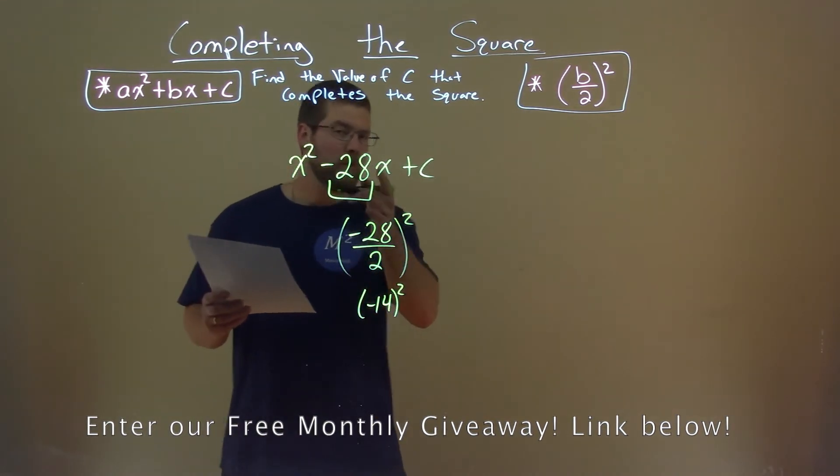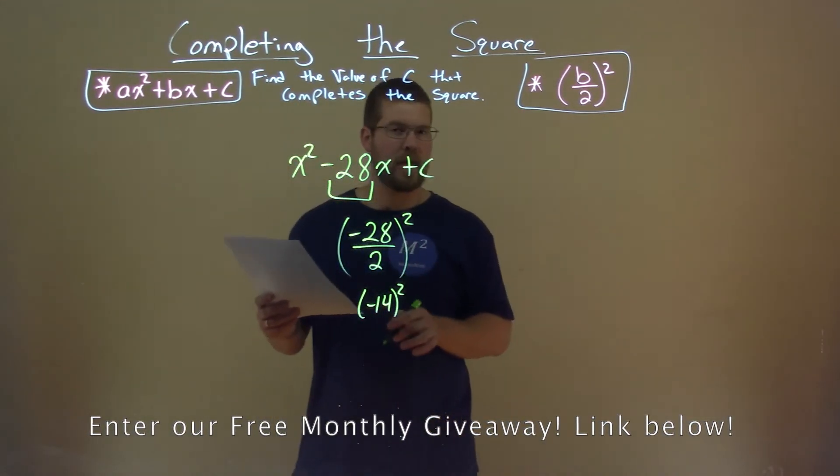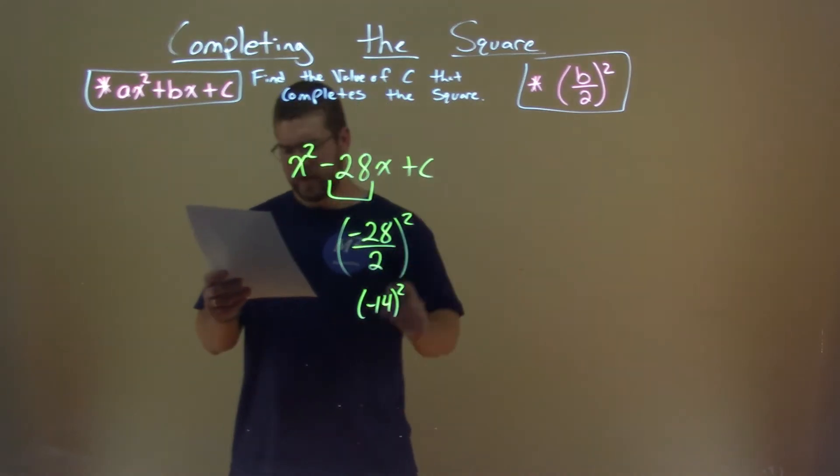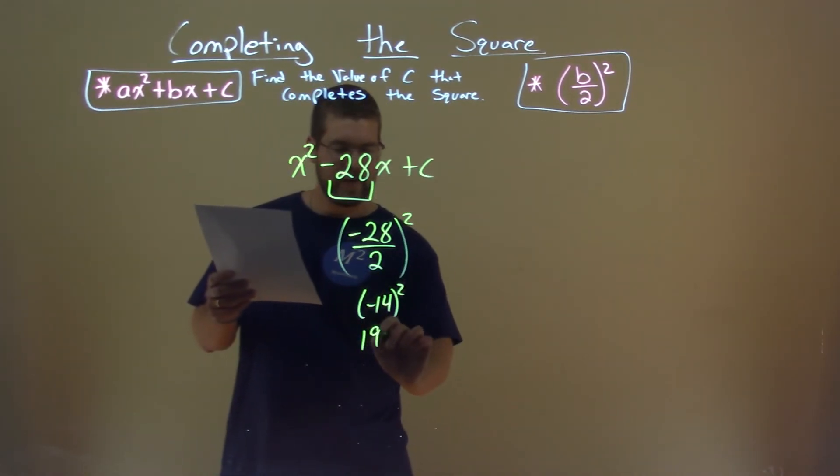14 squared, if you can guess it or know it off the top of your head, let me know down in the comment section below. But negative 14 squared is 196.